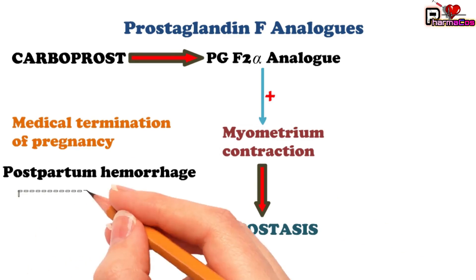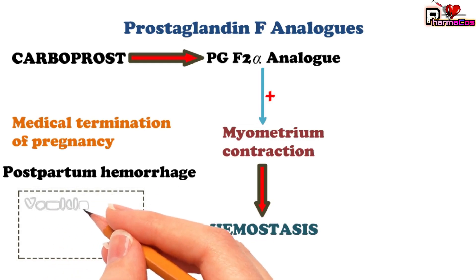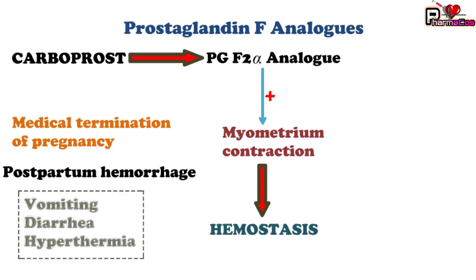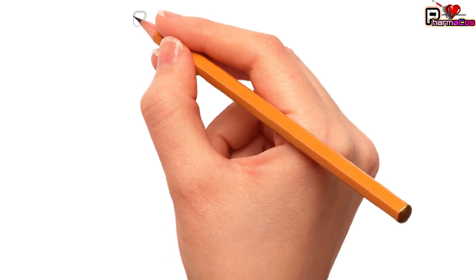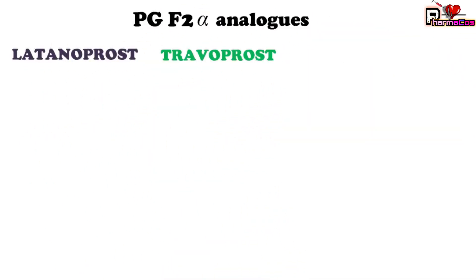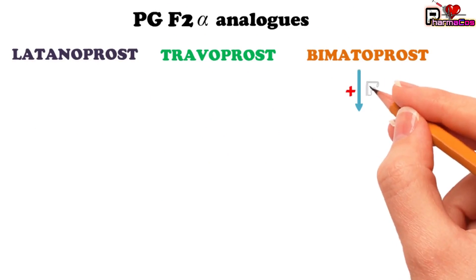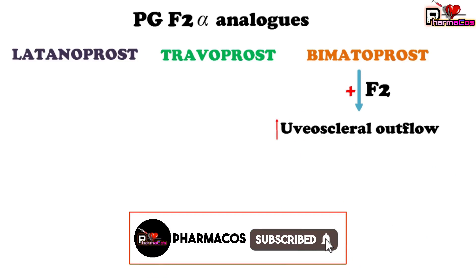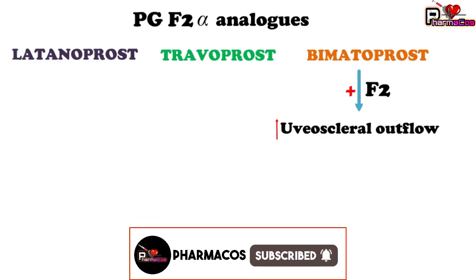Carboprost produces some side effects mainly related to the gastrointestinal system: vomiting, diarrhea, and also hyperthermia — a slight increase in body temperature. Other drugs included in prostaglandin F2 analogs include latanoprost, travoprost, and bimatoprost. They act on prostaglandin F2 receptors, thereby increasing uveoscleral outflow, which results in increased secretion — or drainage — of the aqueous humor.